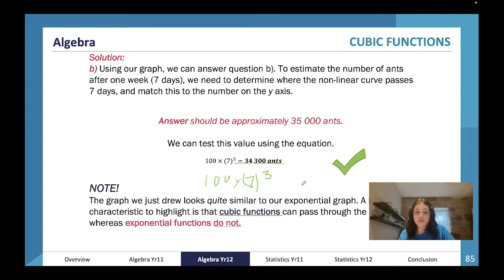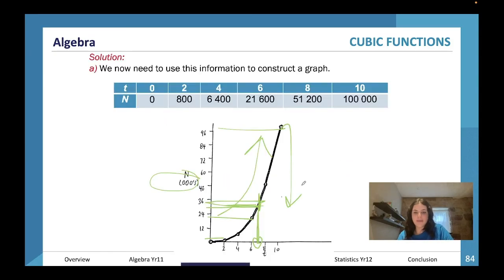The graph we just drew looks very similar to exponentials. However, it's important to highlight that cubic functions can go through the point (0,0). Exponential functions do not. What I mean by that is exponential functions always start like this; they never start from (0,0) because they're always growing from something.